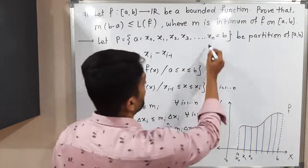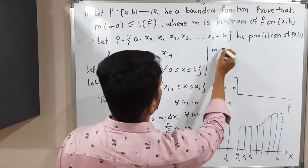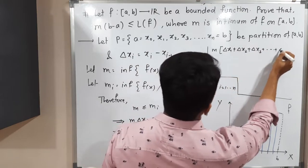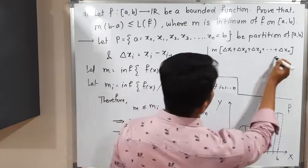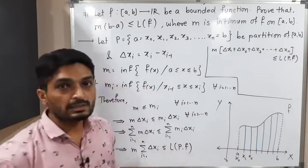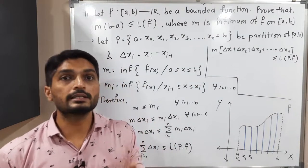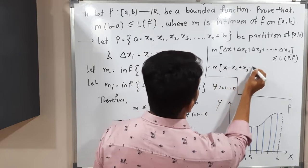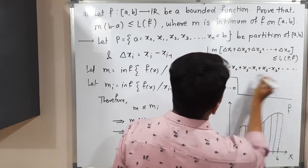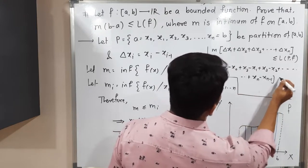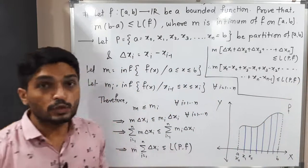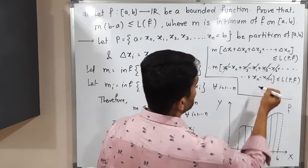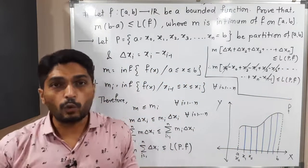Expanding the summation on the left: m · (Δx₁ + Δx₂ + Δx₃ + ... + Δxₙ) ≤ L(P, f). Substituting Δx₁ = x₁ − x₀, Δx₂ = x₂ − x₁, Δx₃ = x₃ − x₂, and so on, we get m · [(x₁ − x₀) + (x₂ − x₁) + (x₃ − x₂) + ... + (xₙ − xₙ₋₁)] ≤ L(P, f). This is a telescoping sum, so all intermediate terms cancel.